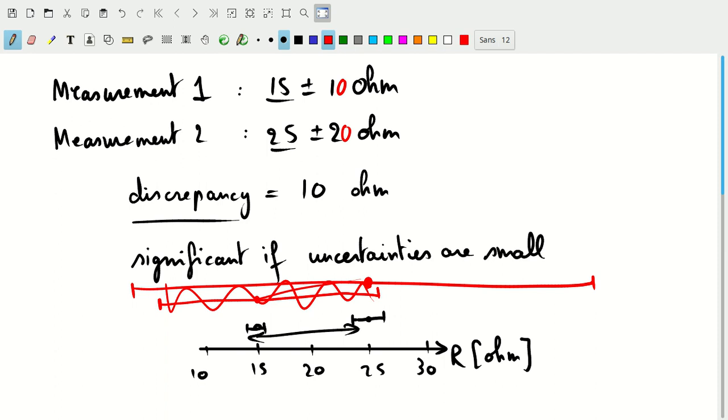In the case of the significantly different measurements, so let's go back to the black points that I drew initially. Here it indicates that one of these experiments must be wrong or must have an uncertainty that is wrong. And that is what it means when there's a significant discrepancy between the two measurements.